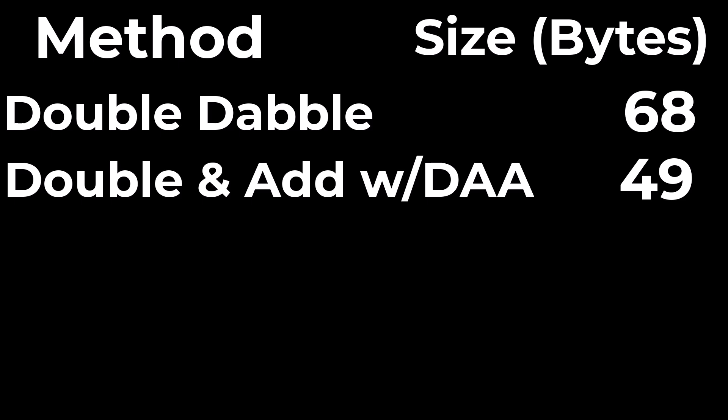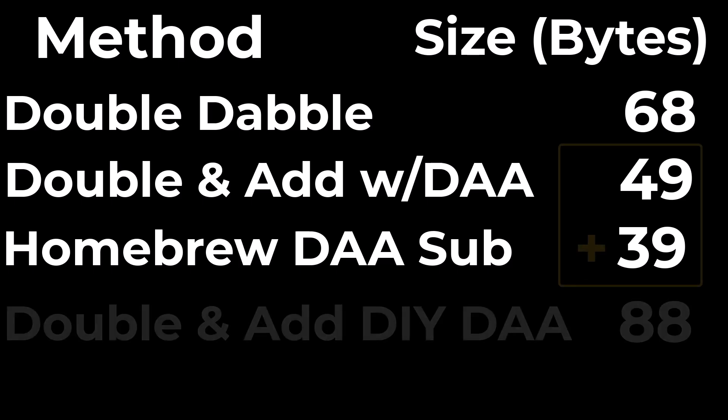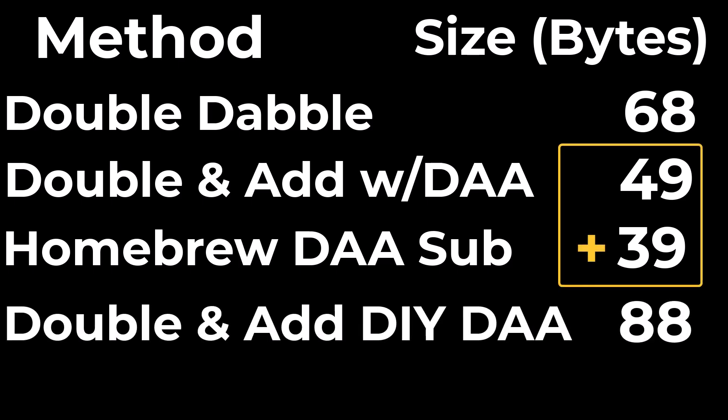If this was an 8008 or something else that didn't have the DAA, writing our own DAA would have taken the same number of bytes as the dabble routine did here, which is about 27 bytes. And then plus each DAA instruction would have needed to be replaced with a call, which overall would have taken another 12 bytes. So to compare apples to apples, the double and add method would have taken 88 bytes if we wrote our own DAA routine compared to 68 bytes for the double dabble method. So it's good to know that these tricks that the double dabble brought to the table actually gave that method an advantage over writing our own DAA, but still not as good as using the double and add with the DAA.